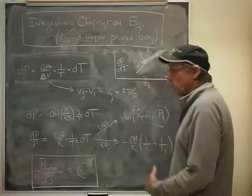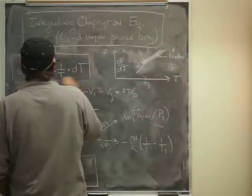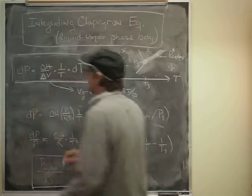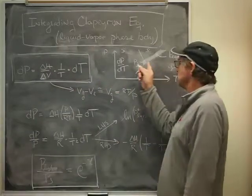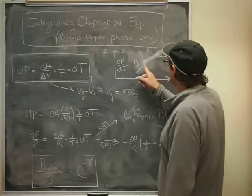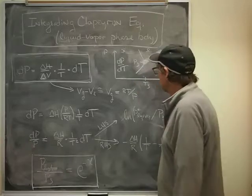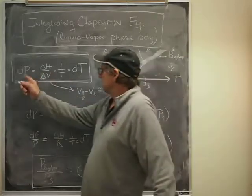And what we have is the Clapeyron equation, which is this right here. The Clapeyron equation tells us about the slope of a phase boundary. So the idea is along this phase boundary there's a certain slope dP/dT, and here's what it's given by.